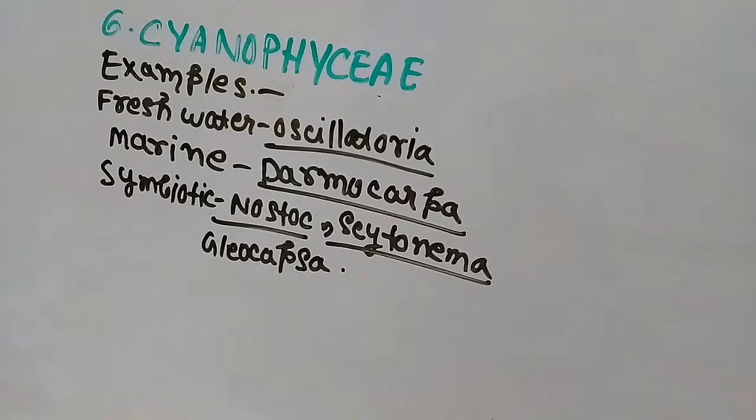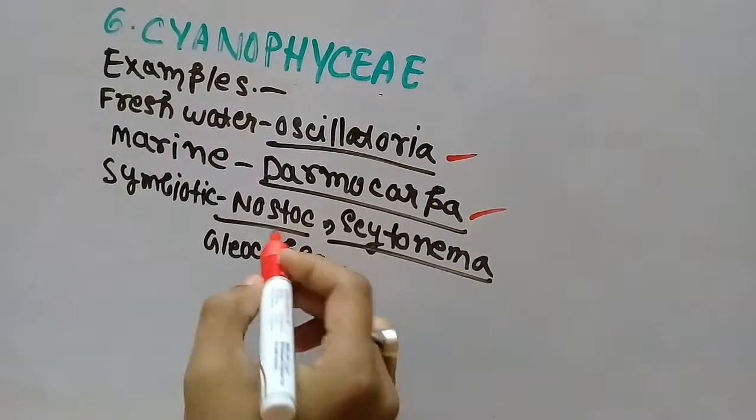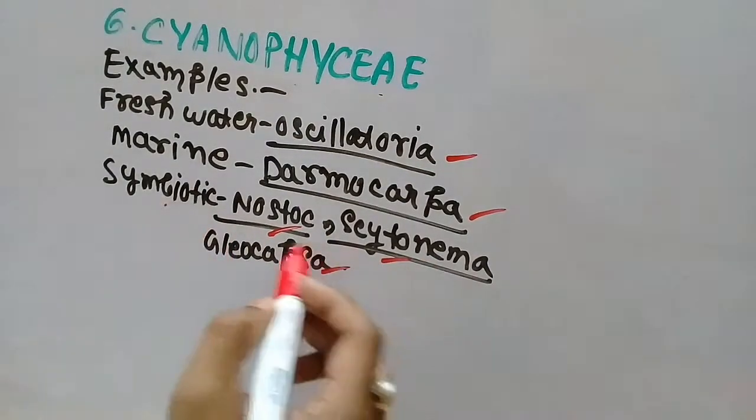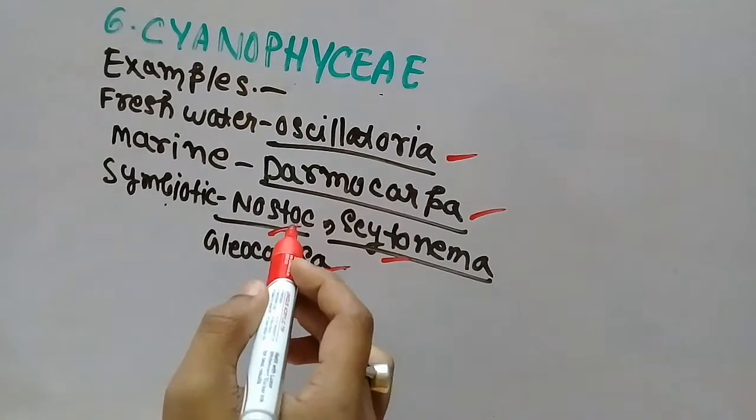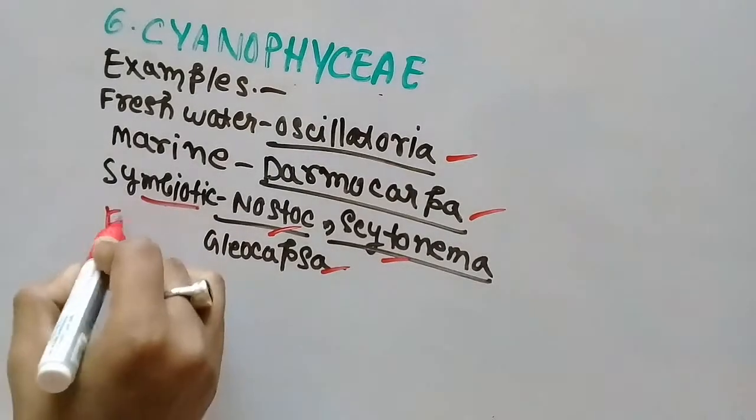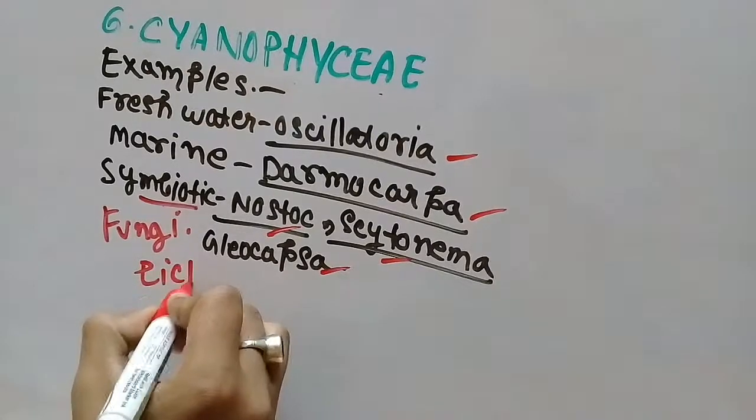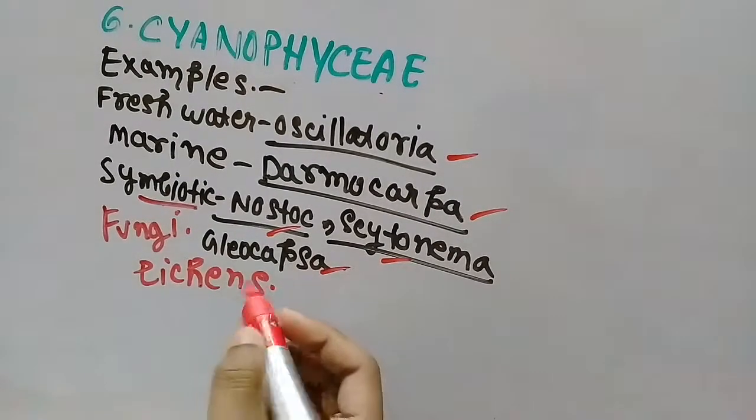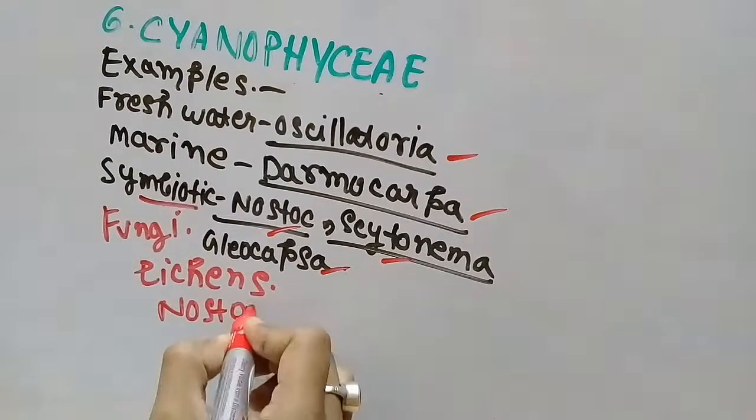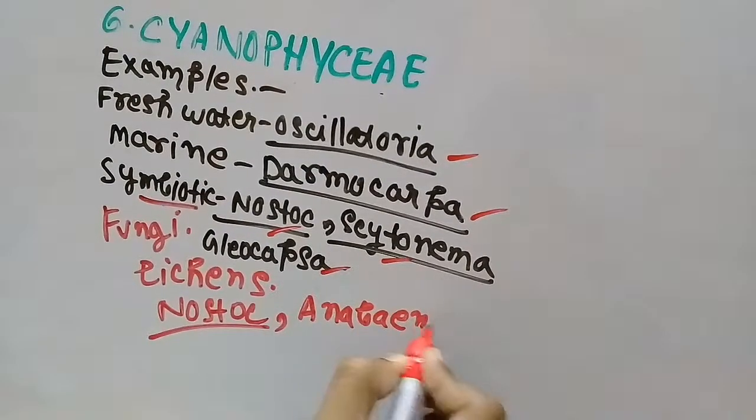These are some examples of Cyanophyceae: freshwater is Oscillatoria, marine is Darmocaba, symbiotic is Nostoc, Cytonyma, and Gliocapsa. In symbiotic association, Nostoc and Cytonyma grow symbiotically with different fungi and they form lichens afterwards in symbiotic association.